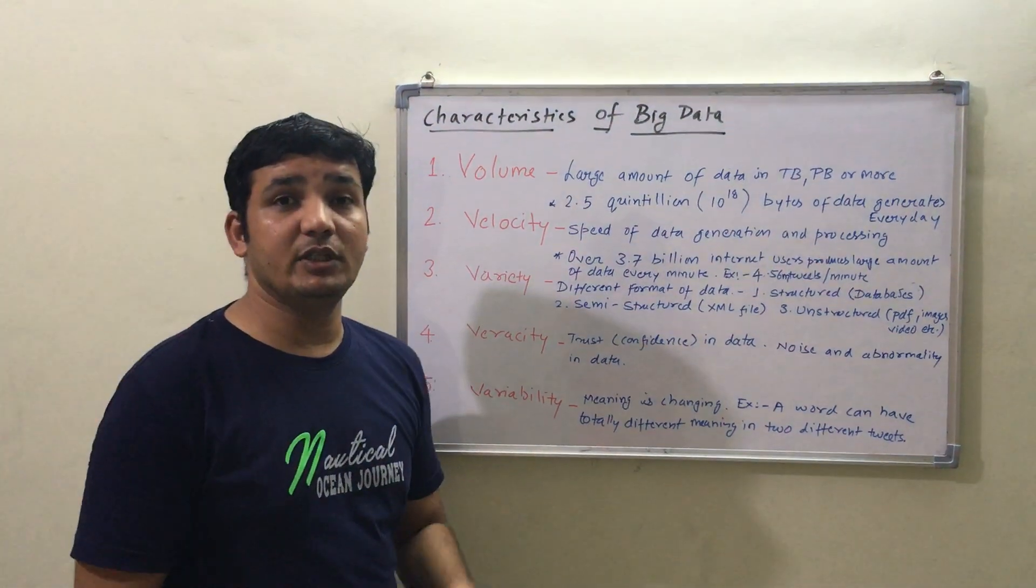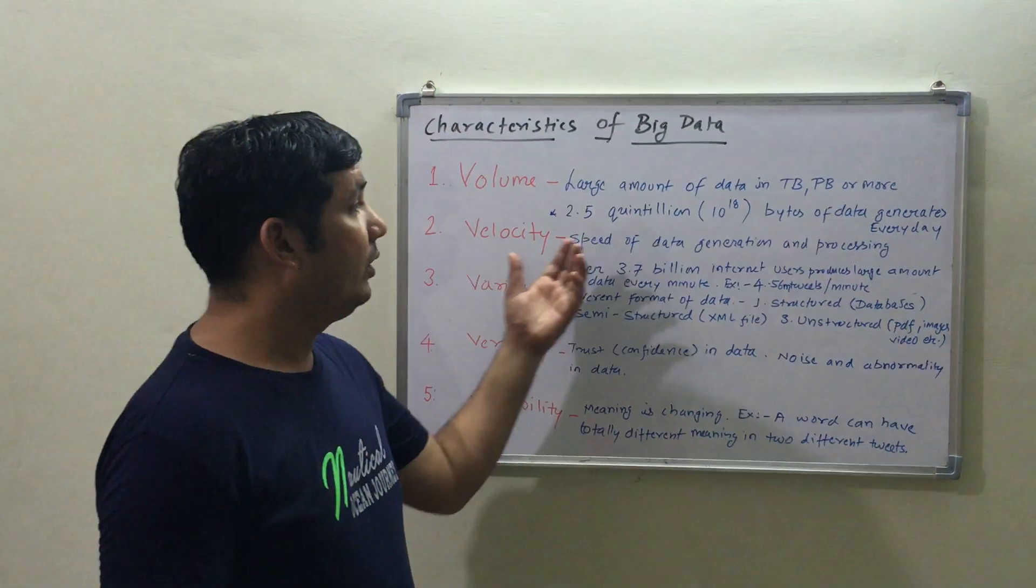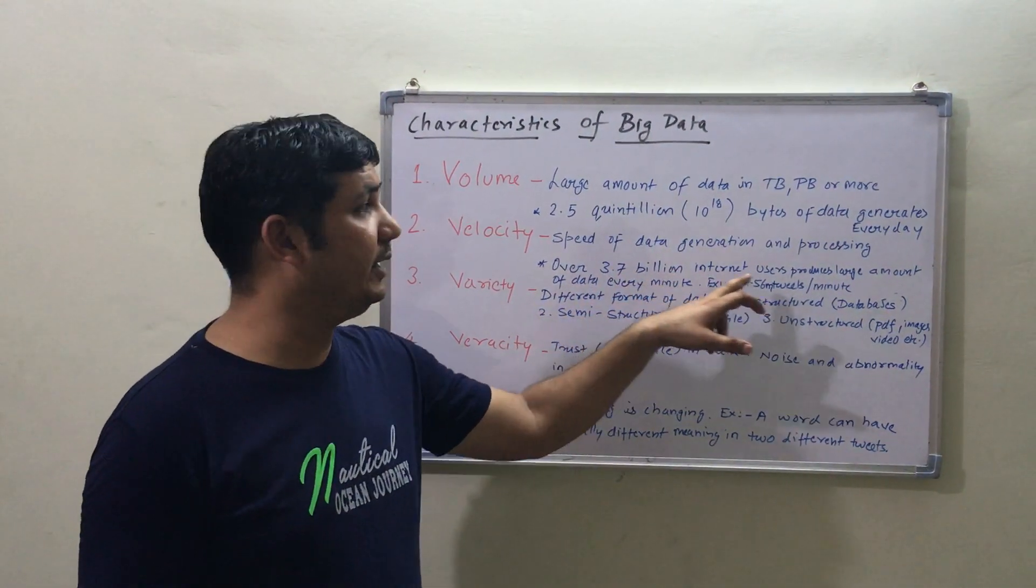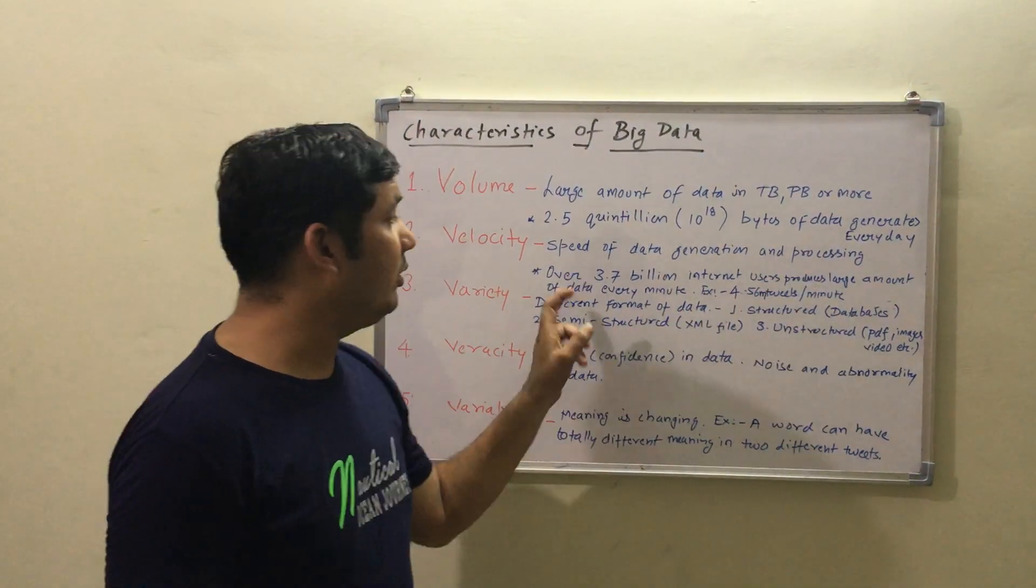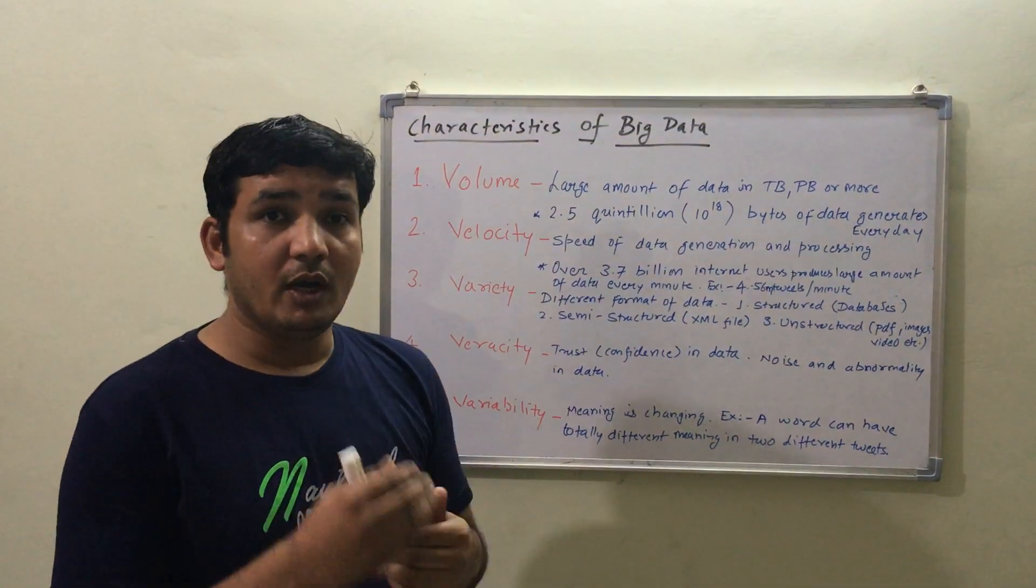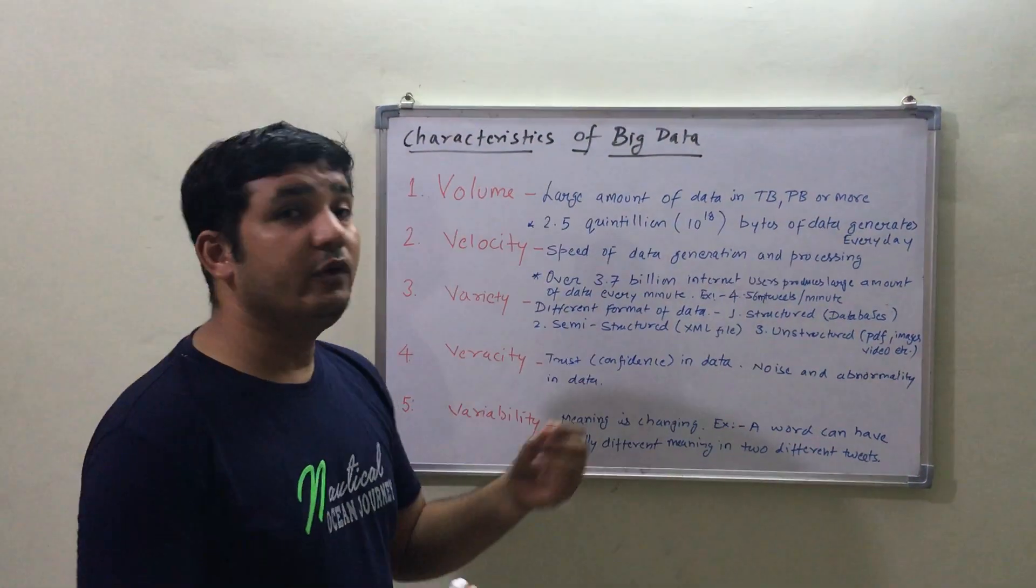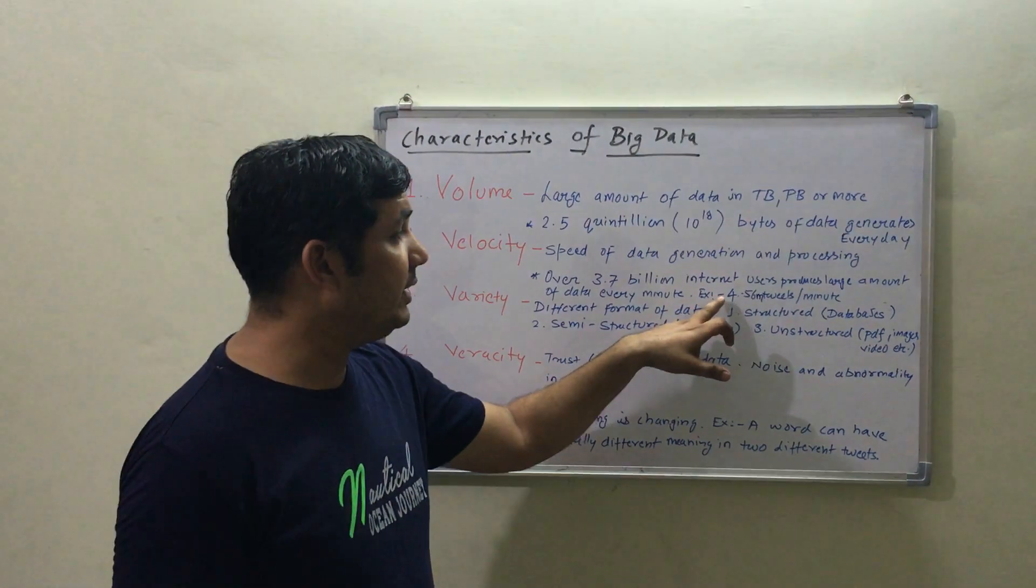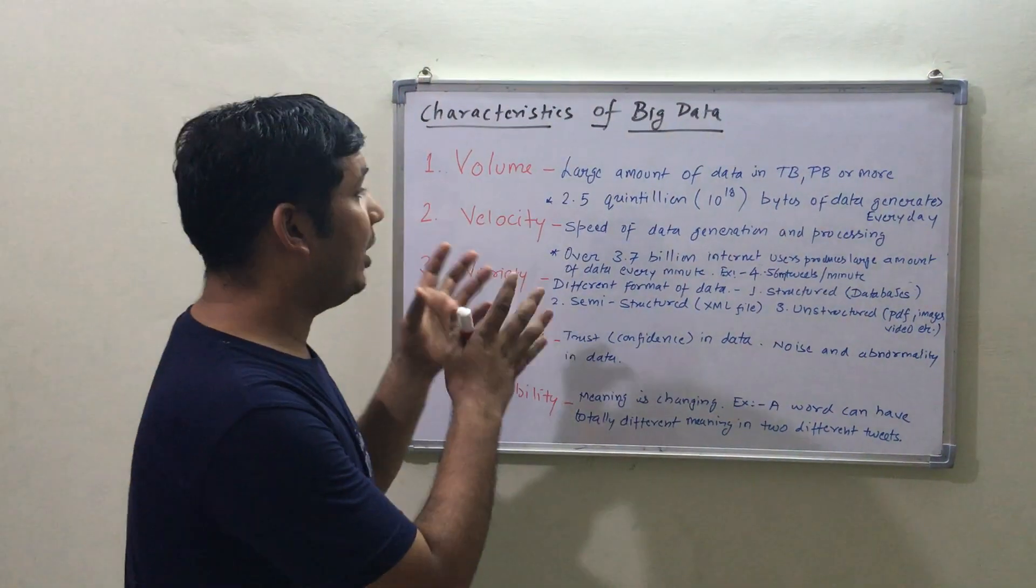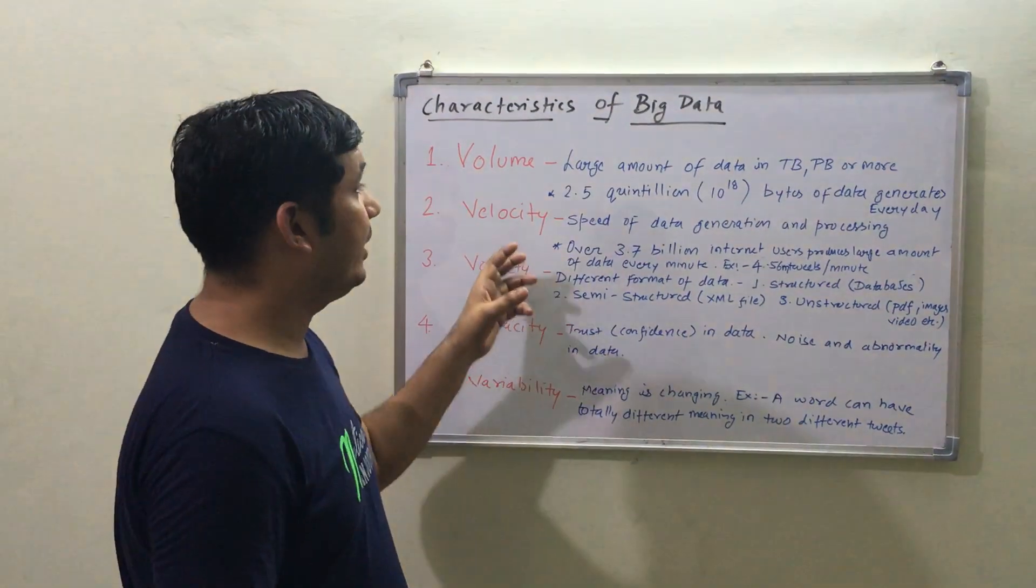Then comes Velocity. Velocity means the rate of data generation and processing. About 3.7 billion internet users produce large amounts of data every minute by uploading photos, videos, and through Twitter activities. For example, 4.56 million tweets in one minute. This is a major challenge in Big Data.